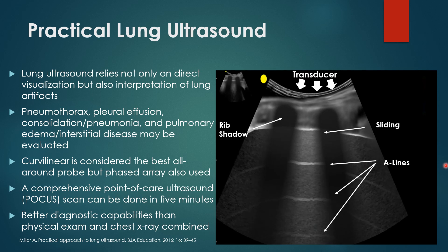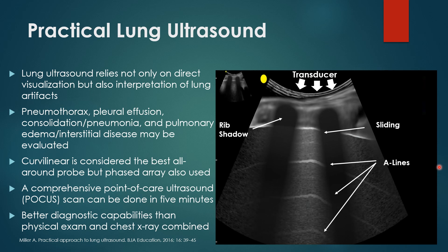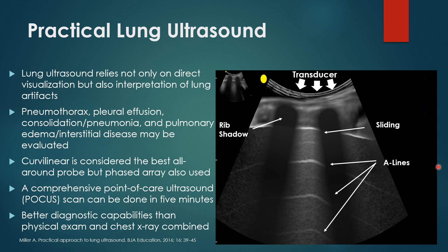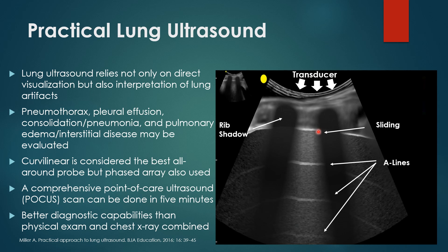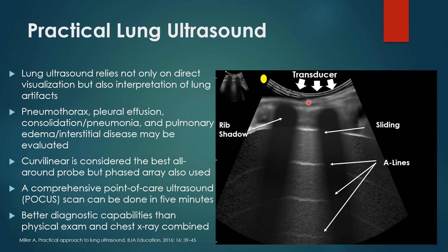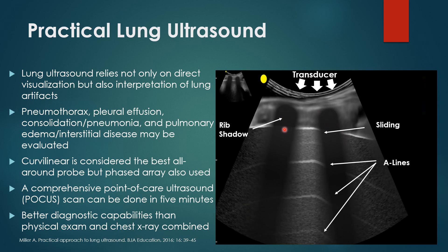The curvilinear probe is considered the best all-around probe, but the phased array is also used, especially for those who do a lot of cardiac scanning. A comprehensive POCUS scan can be done in about five minutes using the four zones on each side. Typically, you have better diagnostic capabilities with lung ultrasound than physical exam and chest X-ray combined. As the lung moves, you get sliding right along the pleural line, and A-lines are normal reverberations as the ultrasound bounces through the alveoli. Rib shadows cause some dropout, which is standard.